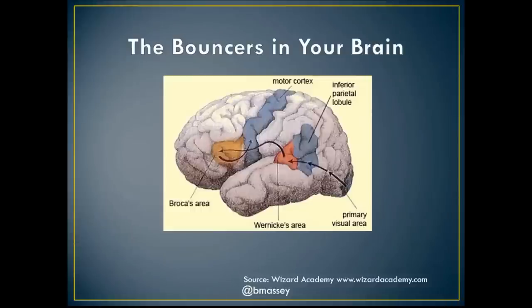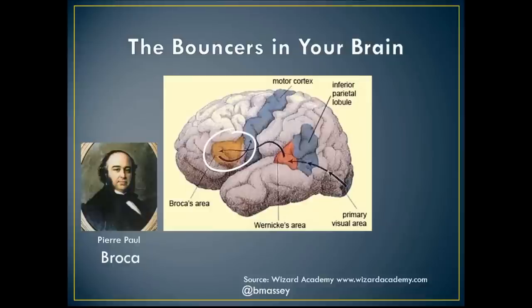I'm going to introduce you to Pierre-Paul Broca. He discovered a part of the brain — if you raise your left hand and bend at the elbow, point just in front of your ear, you're pointing at Broca's area, in the triangular portion of the inferior frontal gyrus. This is the part of the brain responsible for taking words, translating them into meaning, and casting them onto what is called the visual-spatial sketchpad in our brain.